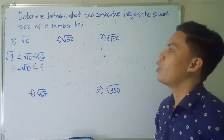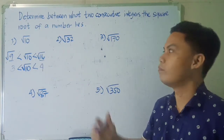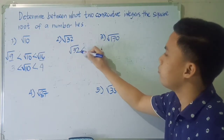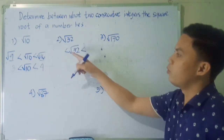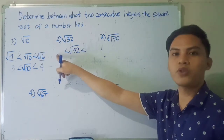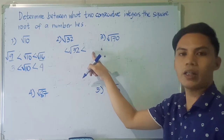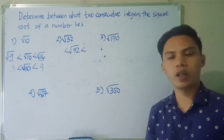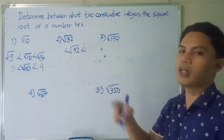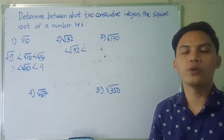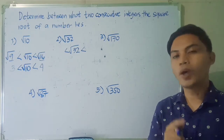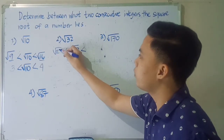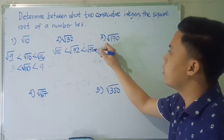How about number 2: square root of 32? We write the square root of 32 in the middle. It is greater than one perfect square and at the same time less than another perfect square. The two consecutive perfect squares where the numerical value 32 falls between are 25 and 36.